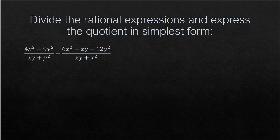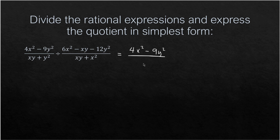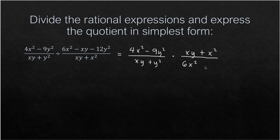Let us go to our next example. We have (4X² − 9Y²) all over (XY + Y²), divided by (6X² − XY − 12Y²) all over (XY + X²). We rewrite this: copy the first expression, proceed to multiplication, and get the reciprocal of the second — so XY + X² goes to the numerator and 6X² − XY − 12Y² goes to the denominator.